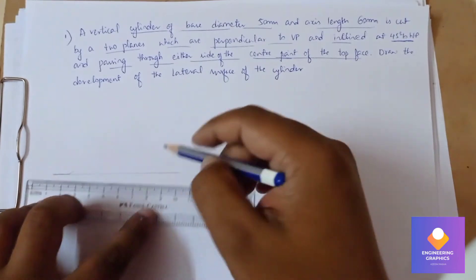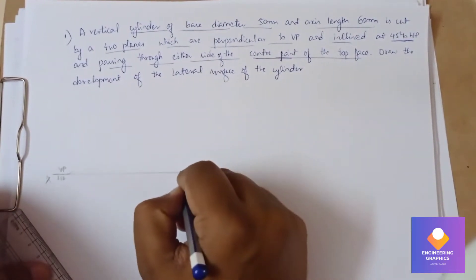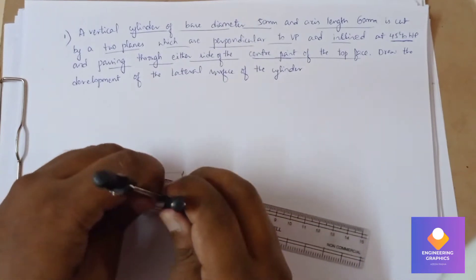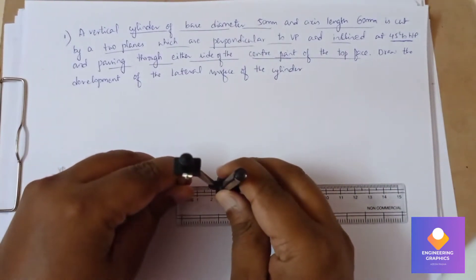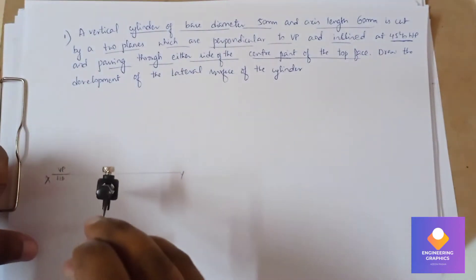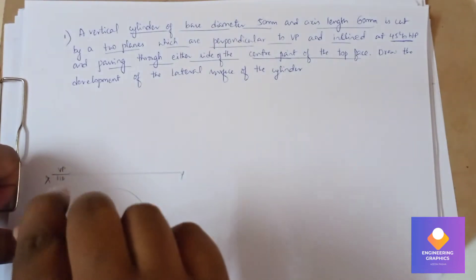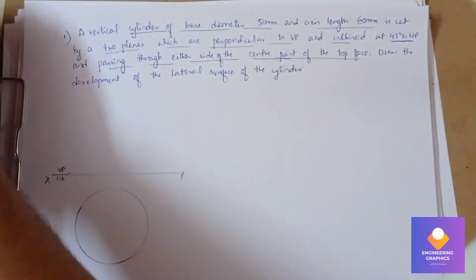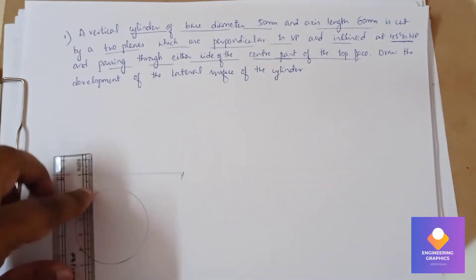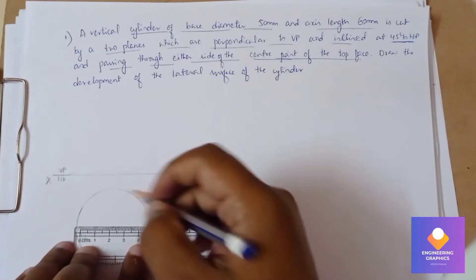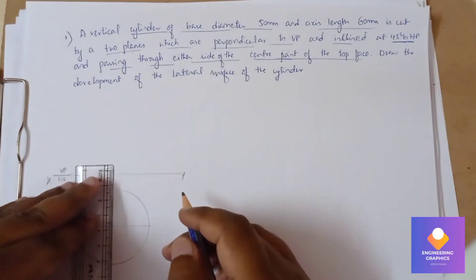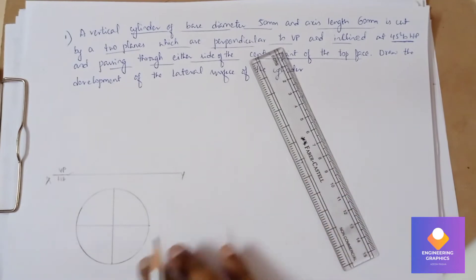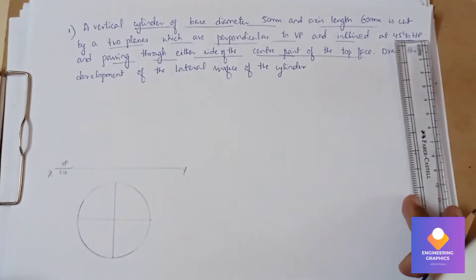In this problem we need to construct a cylinder with diameter 50mm and axis length 60mm. Take the compass and measure 25mm from the scale, then draw the circle. Now we need to cut this circle into equal parts. First I will draw a diameter horizontally, then vertically. Now I will take the protractor and mark the angles.